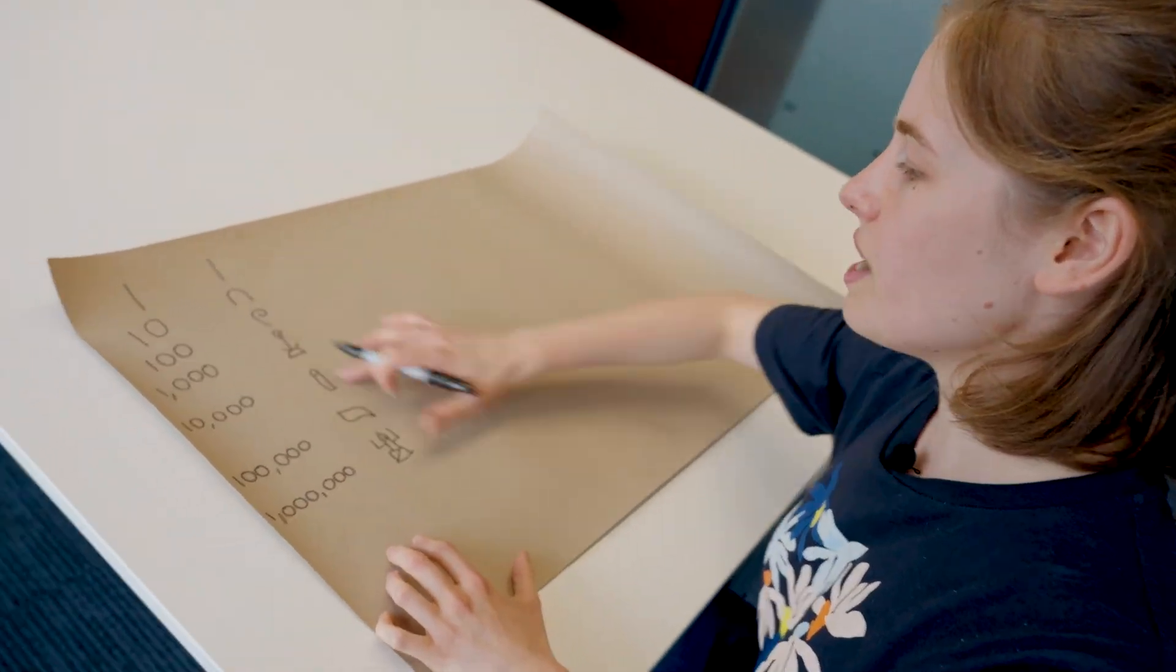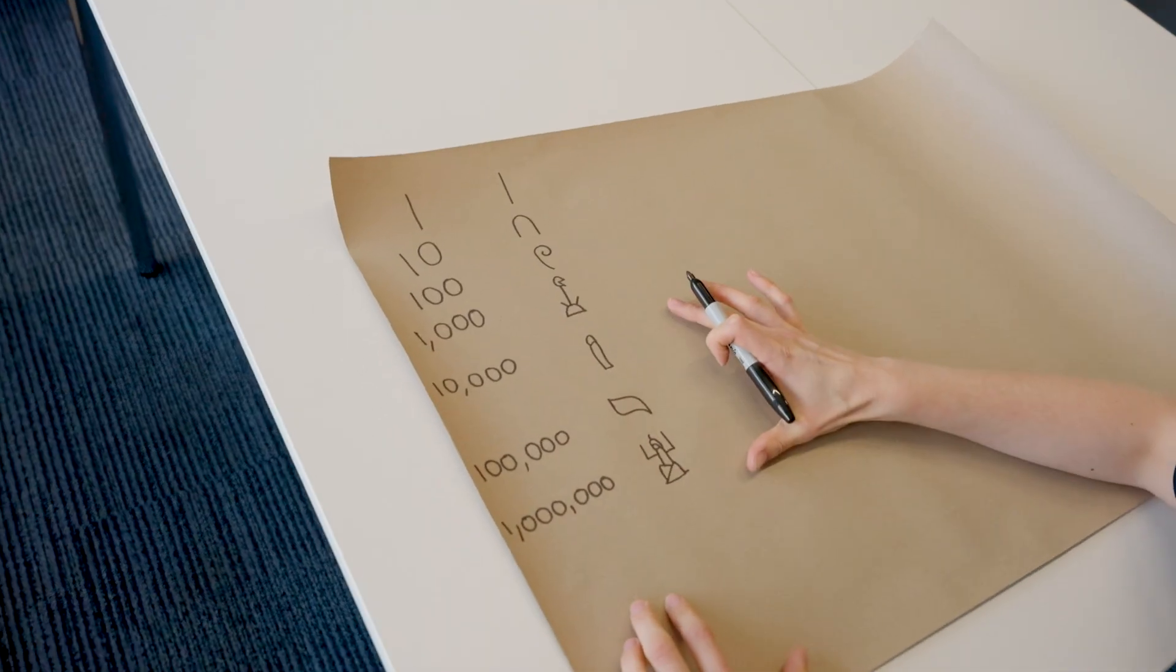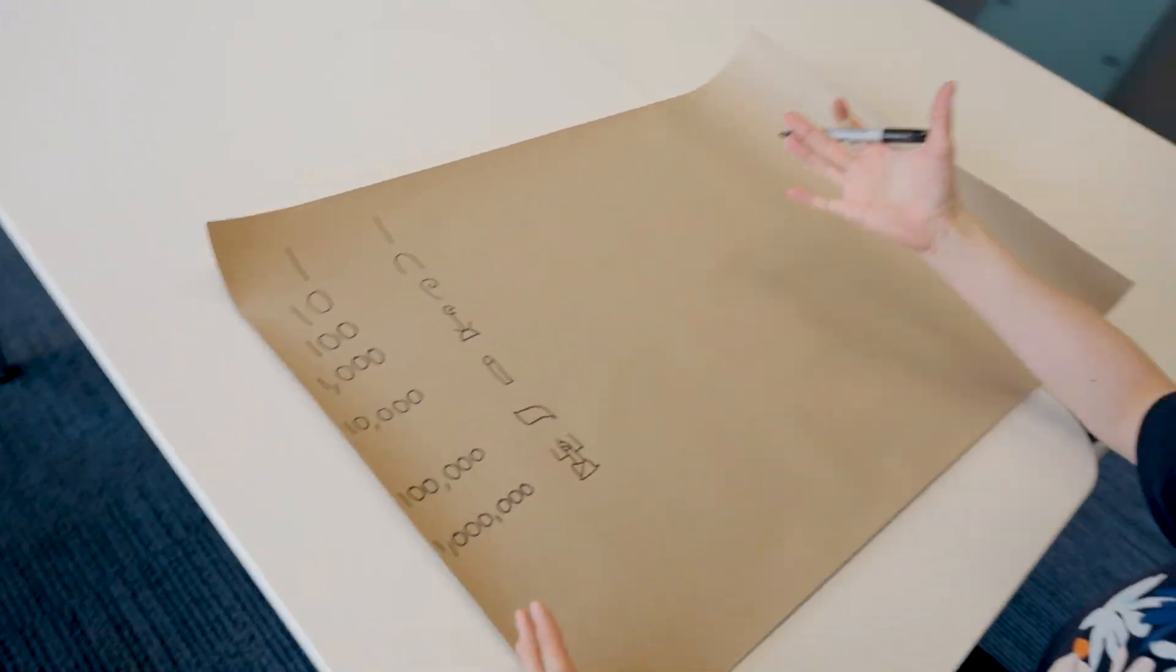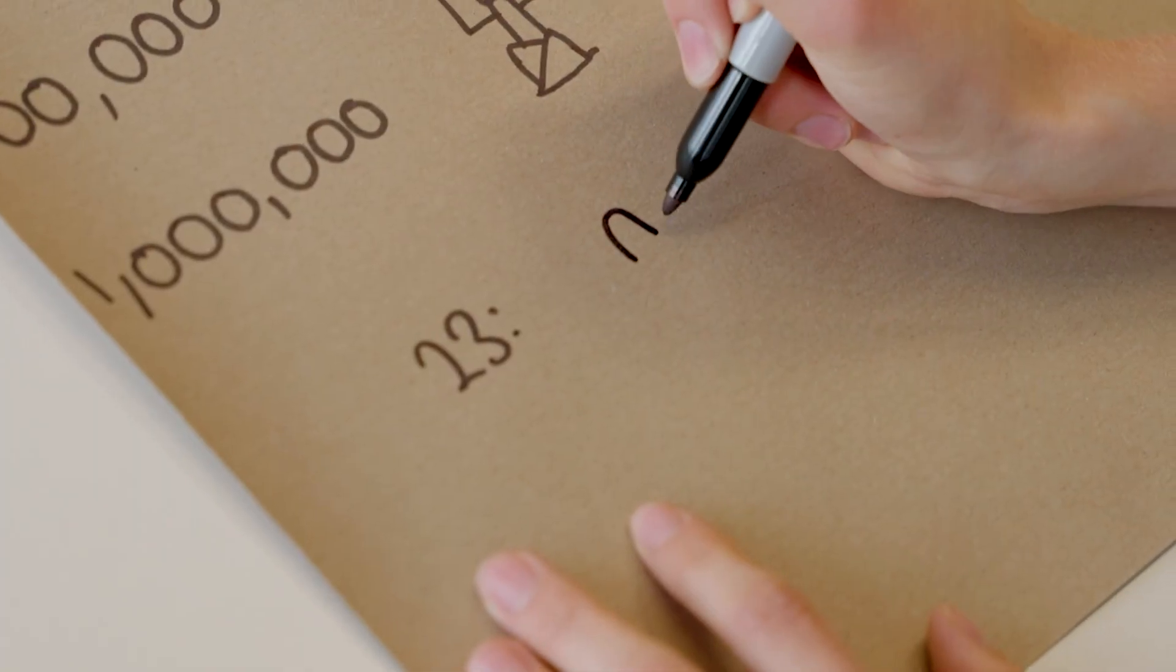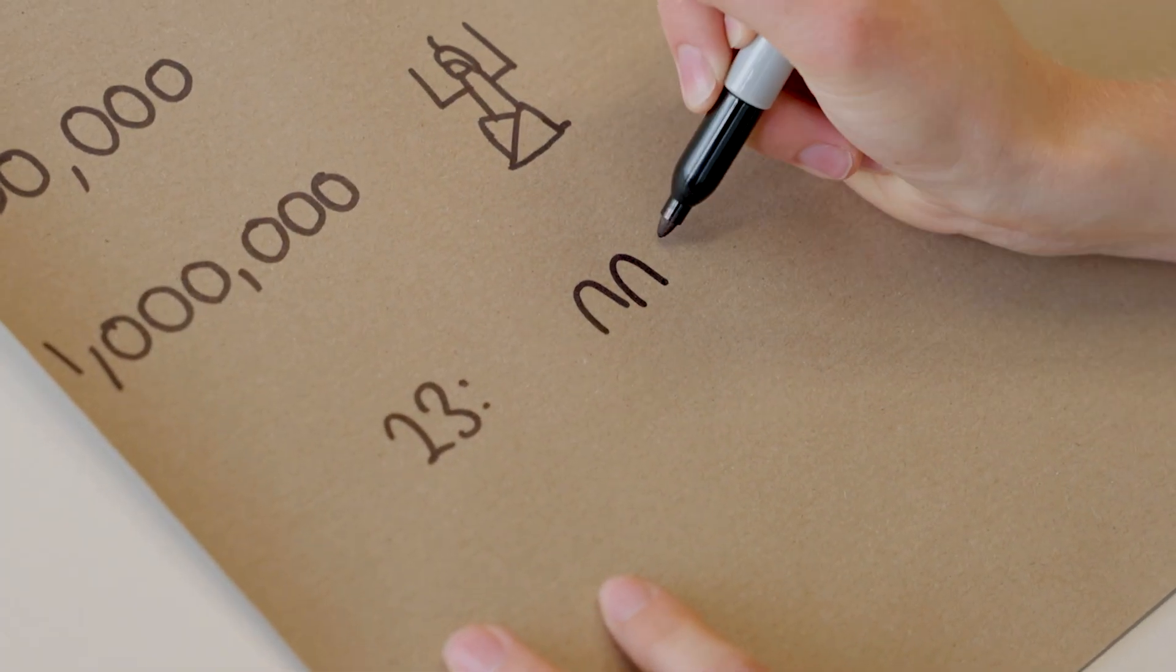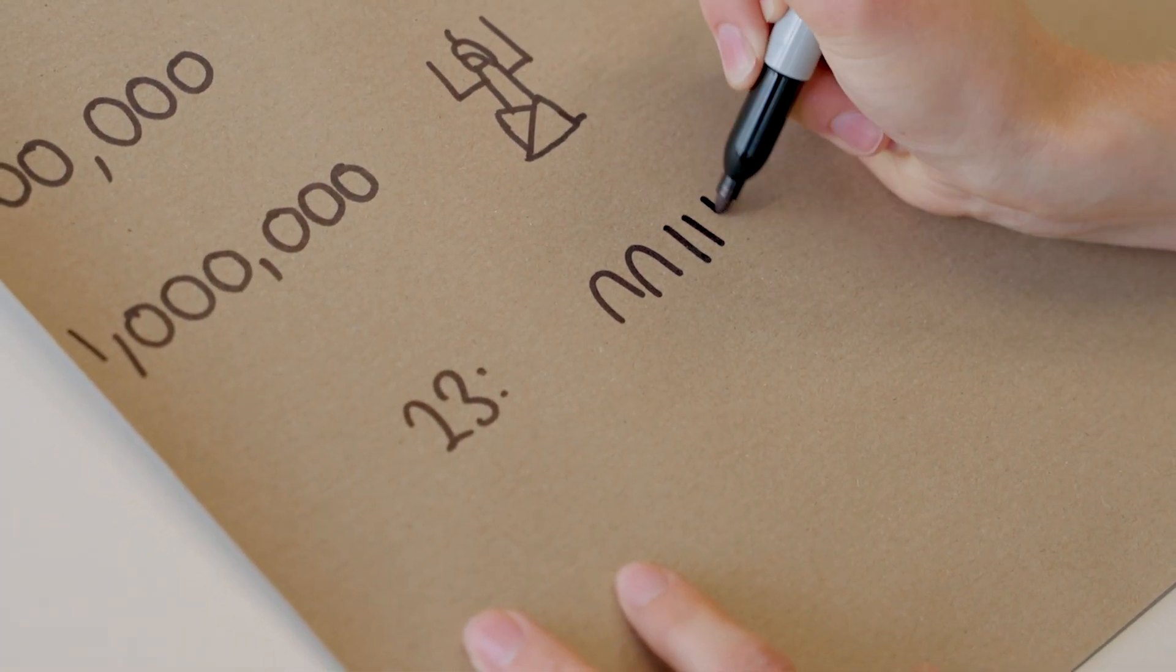So these are the Egyptian hieroglyphs for powers of ten and if you wanted to, maybe say you wanted to write, I don't know, 23, what you'd do is you would write two tens and a three. And you just combine them like that.